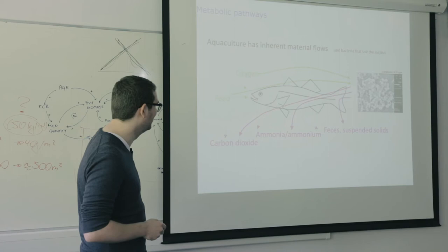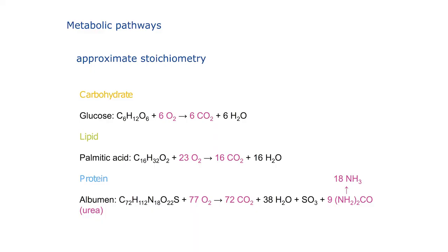Bacteria will also have ammonia and carbon dioxide and everything, but the fish will not grow — so we try to avoid this. This is a stoichiometric view: we have carbohydrates giving CO2, same from the lipids. And from the protein we have our ammonia which will later be nitrate in the system.